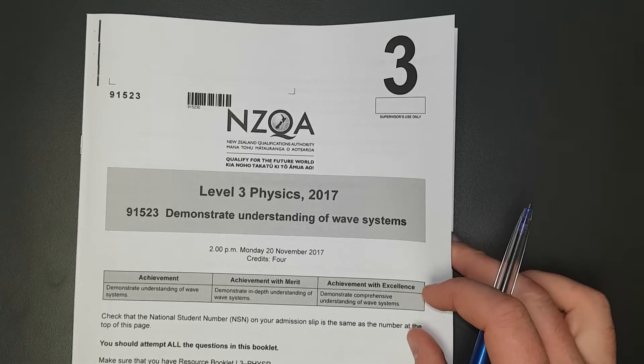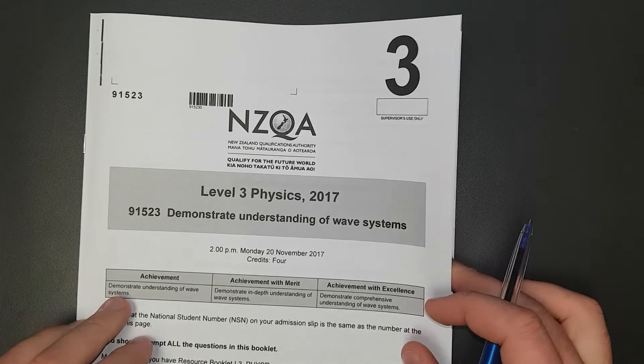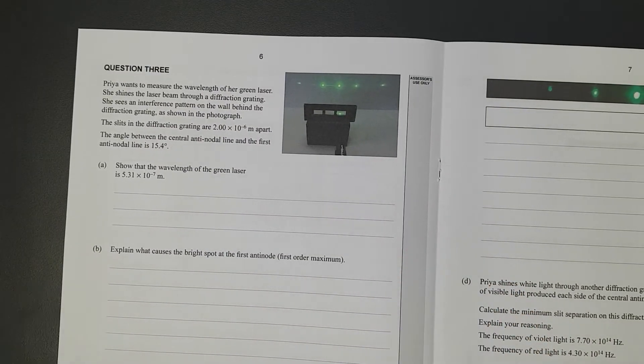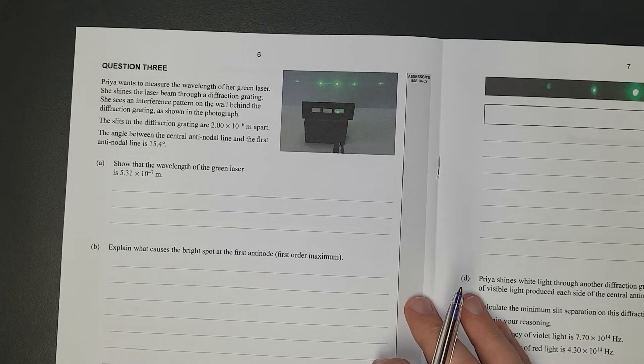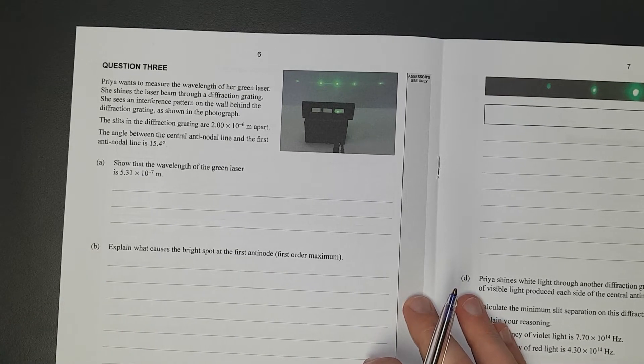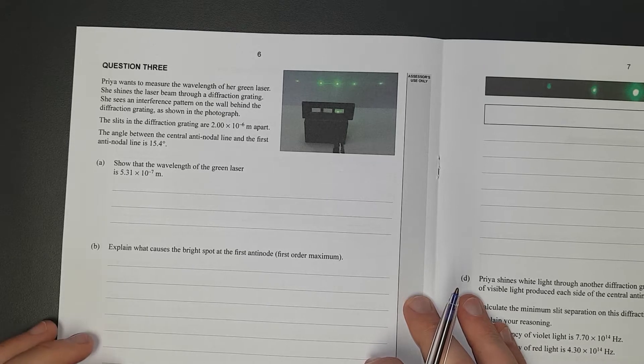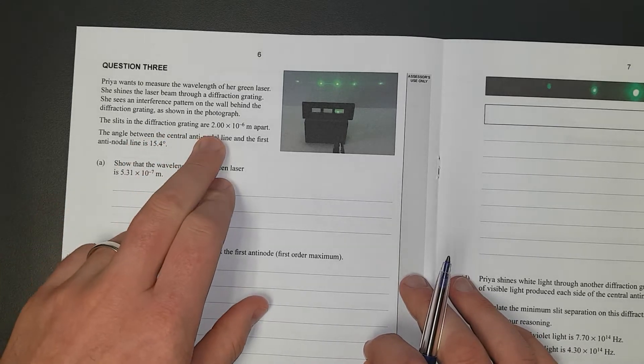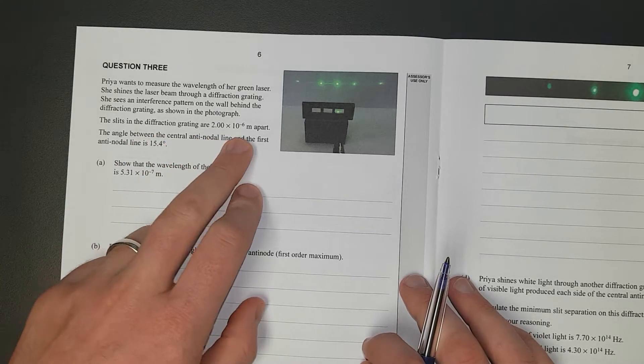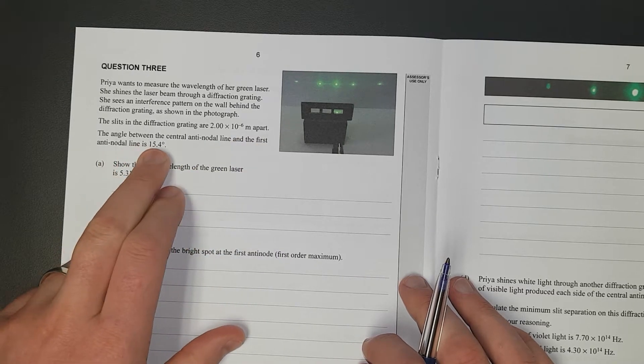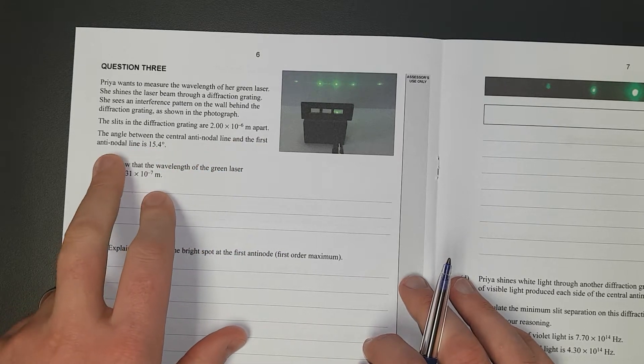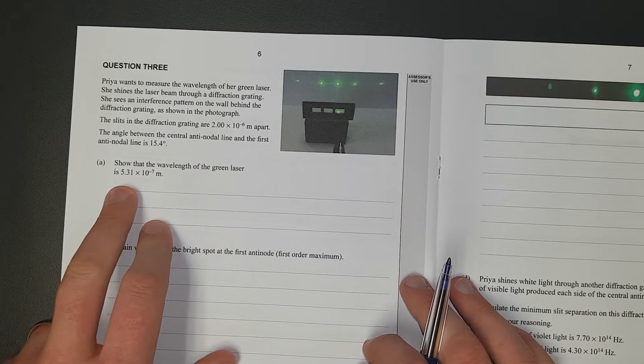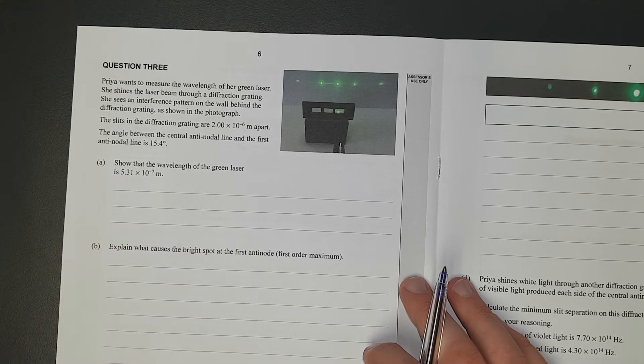For this video, I'll be working through the Level 3 2017 Waves exam, question 3. Priya wants to measure the wavelength of a green laser. She shines a laser beam through a diffraction grating and sees an interference pattern on the wall behind the grating. As shown in the photograph, the slits are 2 micrometers apart. The angle between the central antinodal line and the first antinodal line is 15.4 degrees. Show that the wavelength is 5.31 times 10 to the negative 7 meters.